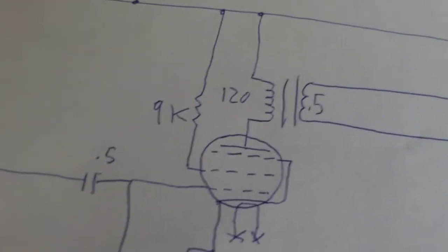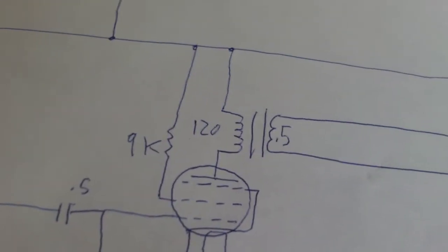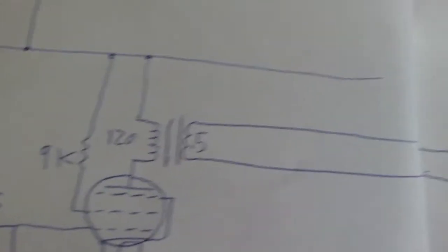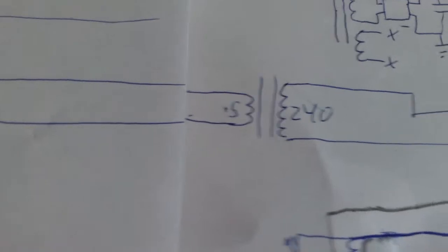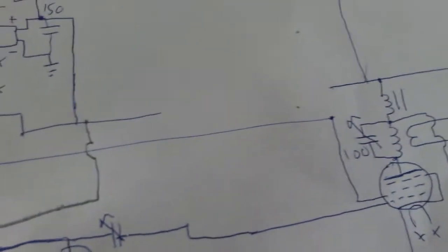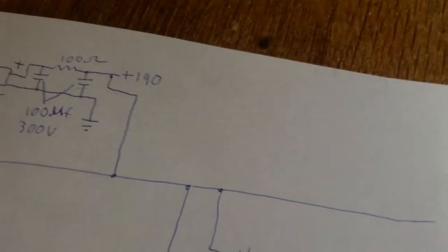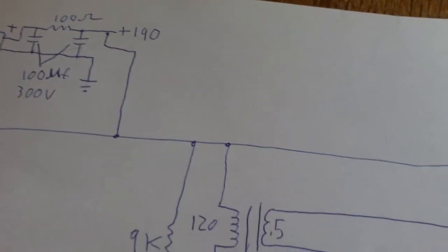And then it has a 9k ohm resistor going from the screen grid to B+. And then a 120 ohm to 0.5 ohm transformer. And that feeds to the screen grid of this tube. This one has 190 volts of B+.